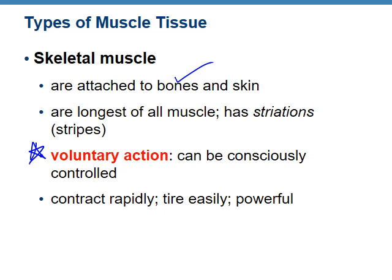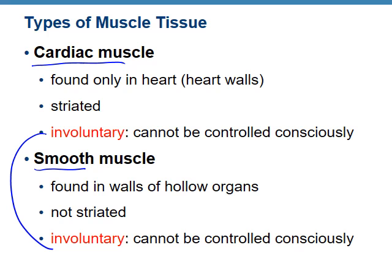The first type of muscle is skeletal muscle. It's attached to bones. The key point is that it's controlled by voluntary action — your brain, via your central nervous system, controls the contraction of a skeletal muscle. They fire rapidly, contract rapidly, tire easily, but are very powerful. The next two types, cardiac and smooth, are involuntary — they cannot be controlled consciously.